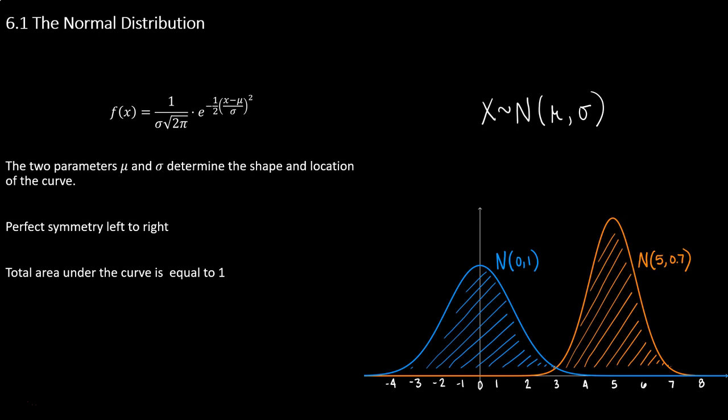For a normal distribution we're going to use a notation similar to the one we use for a binomial distribution. Our random variable X is going to follow a normal curve, so we write X followed by a squiggle and capital N. Inside the parentheses we put the two parameters that dictate the shape and location of the curve: mu and sigma.